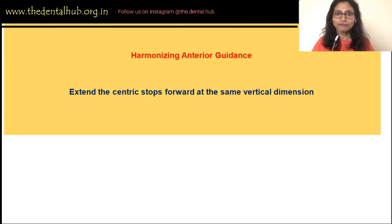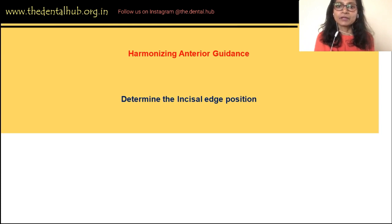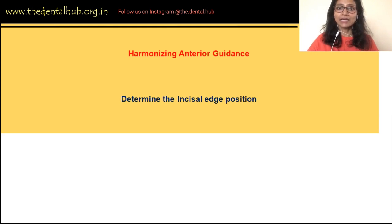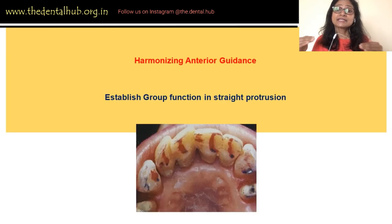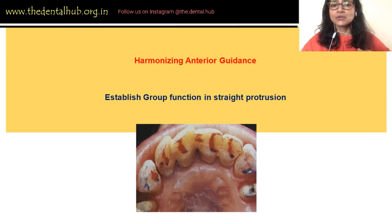The patient is able to move anteriorly and posteriorly at the same vertical dimension, creating a slight slide called the long centric or freedom in centric. Next, check the incisal edge position in relation to the lips during function as previously described. Then establish simultaneous contact as the mandible moves from centric relation to edge-to-edge position in straight protrusion, ensuring simultaneous contact on all lingual surfaces.